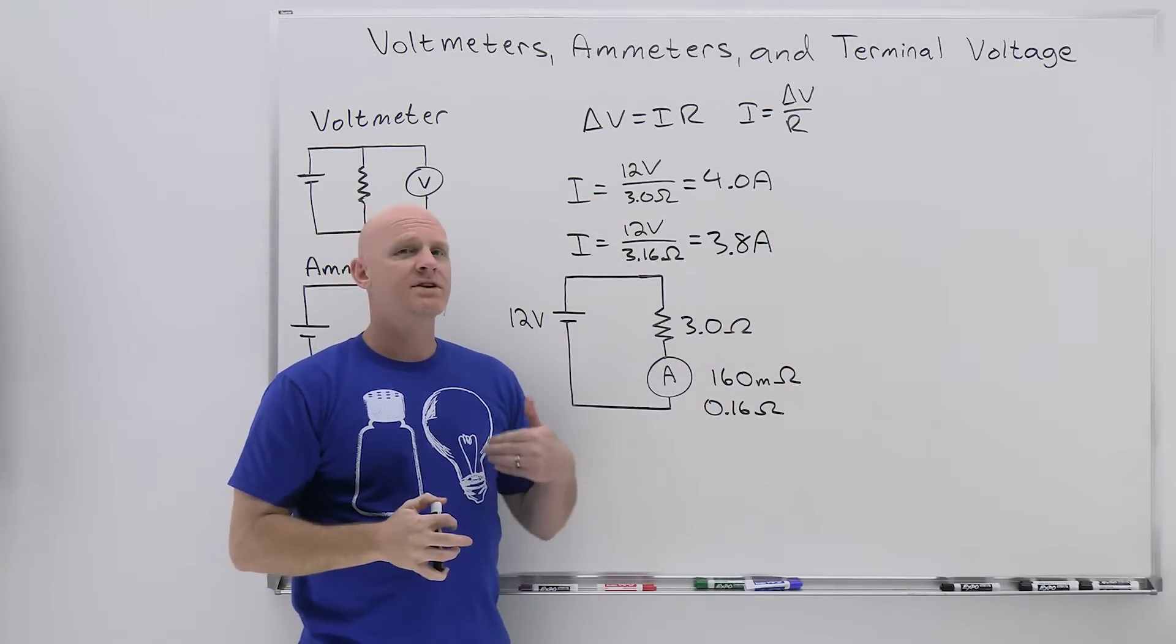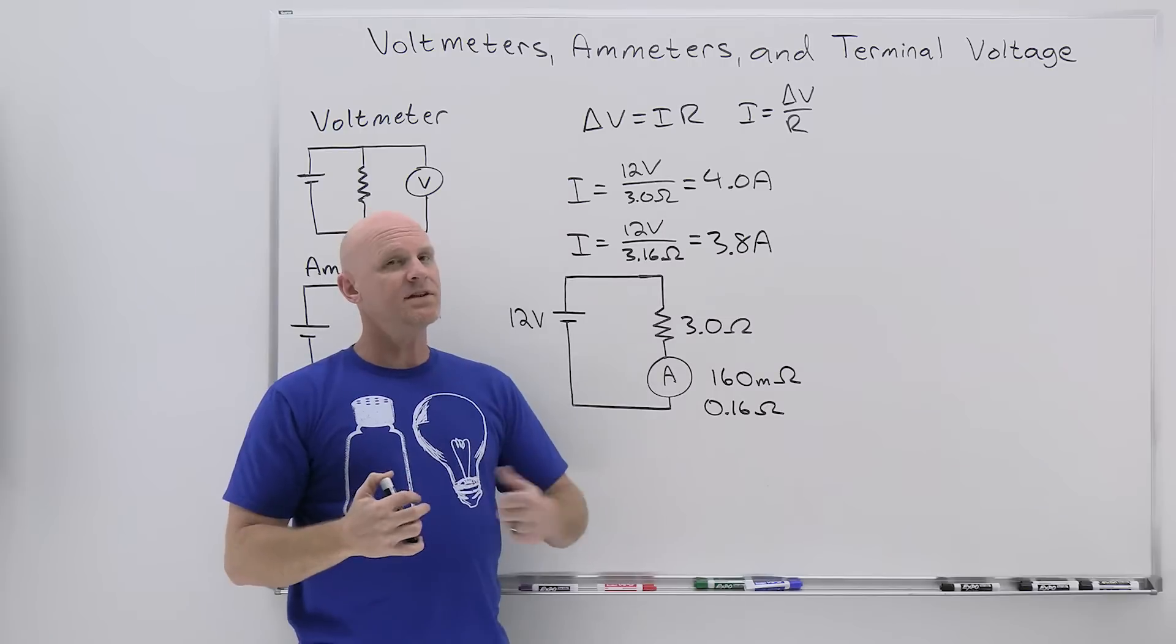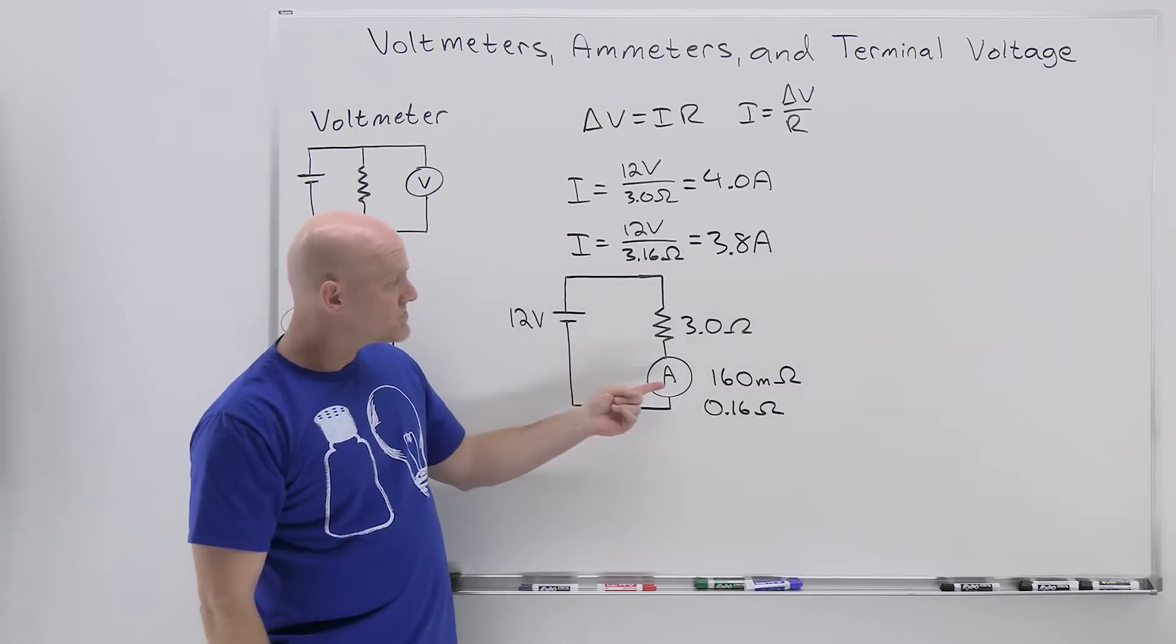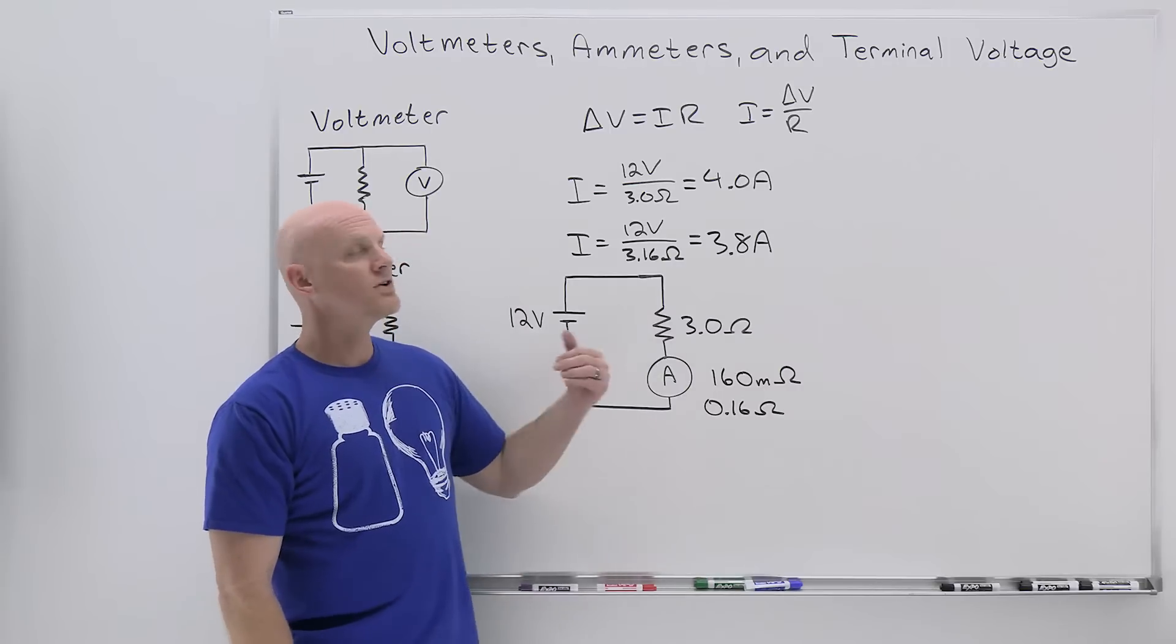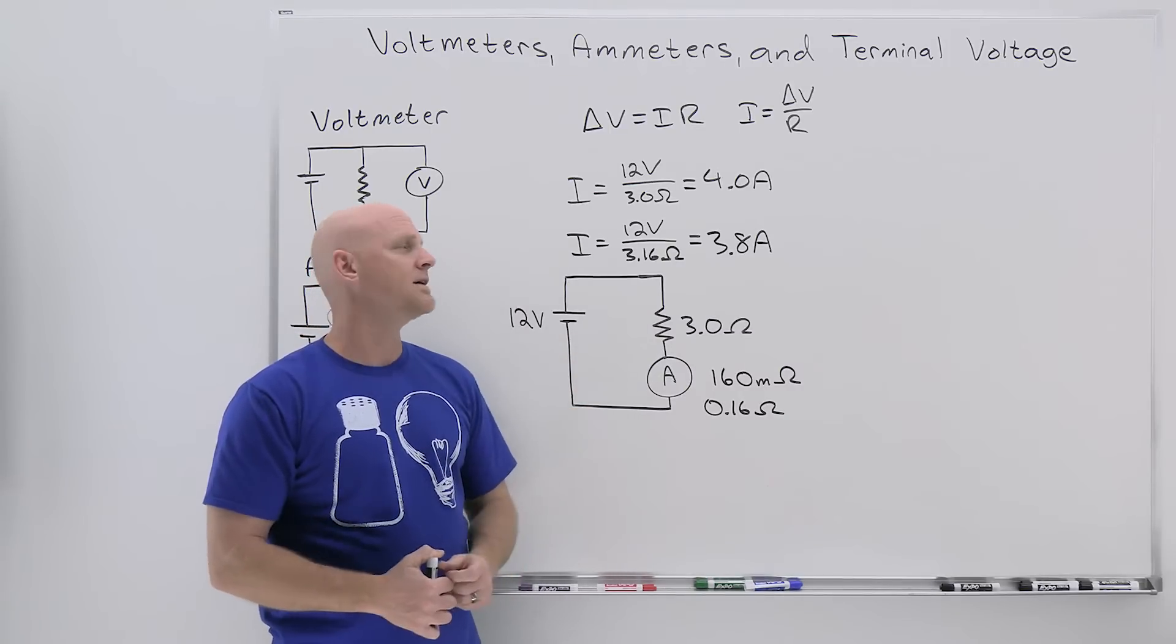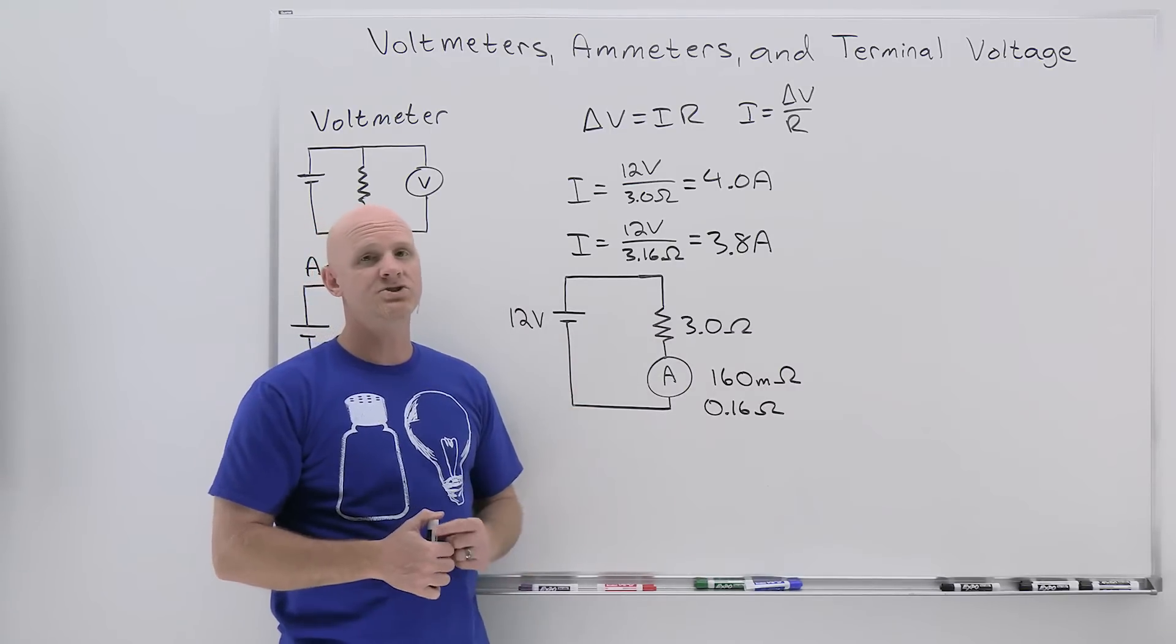And so with an ammeter, your reading is actually always going to come out at least a little bit low. But if you can choose the smallest resistance possible that still gives you a reading on your ammeter, you're going to get the least impact of the ammeter lowering the measured current.